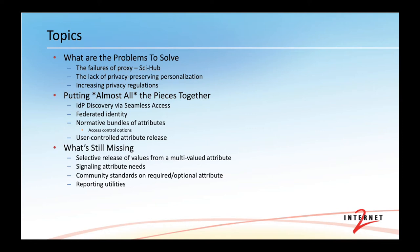We'll put the pieces together now. We're going to talk about IDP identity-provider discovery via Seamless Access. We'll briefly touch on the Federated Identity space. We'll talk about some normative bundles of attributes, which is a way to scale access control and preserve privacy at the same time, and how we might achieve that.